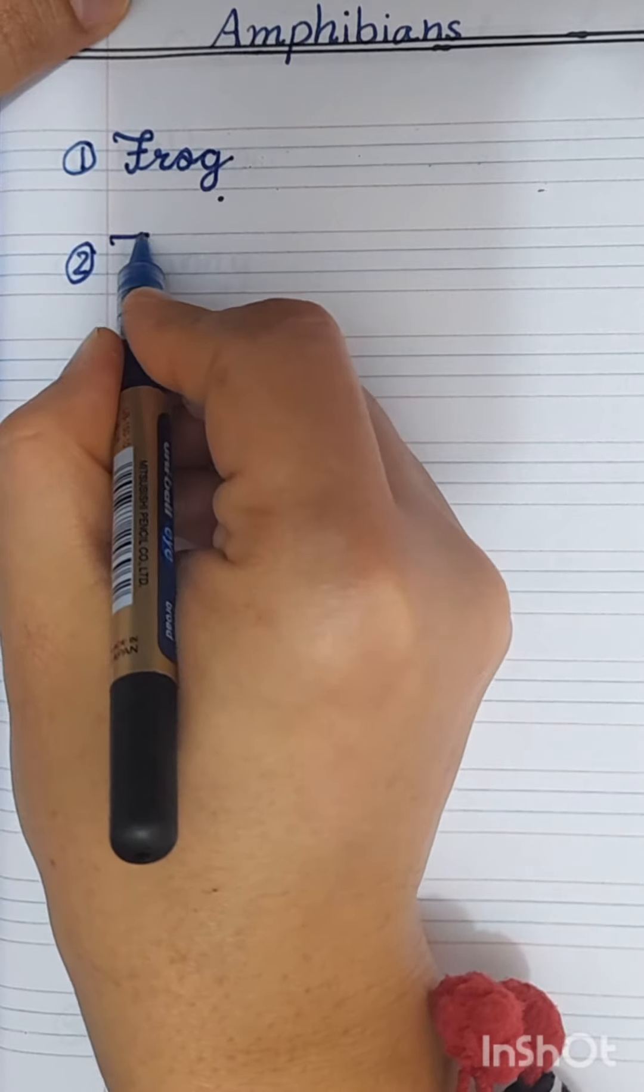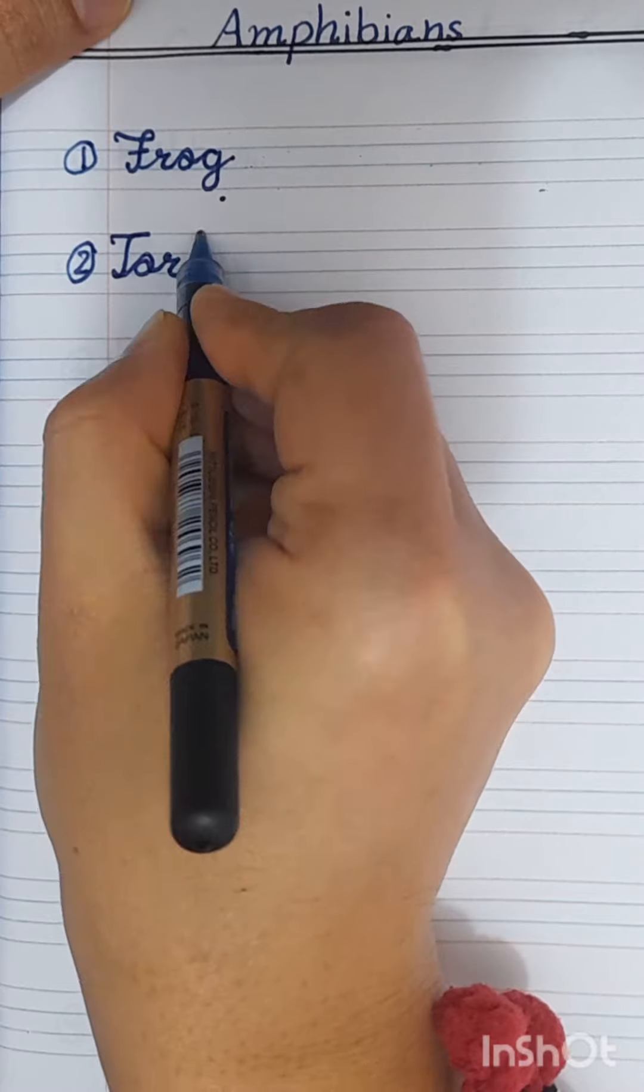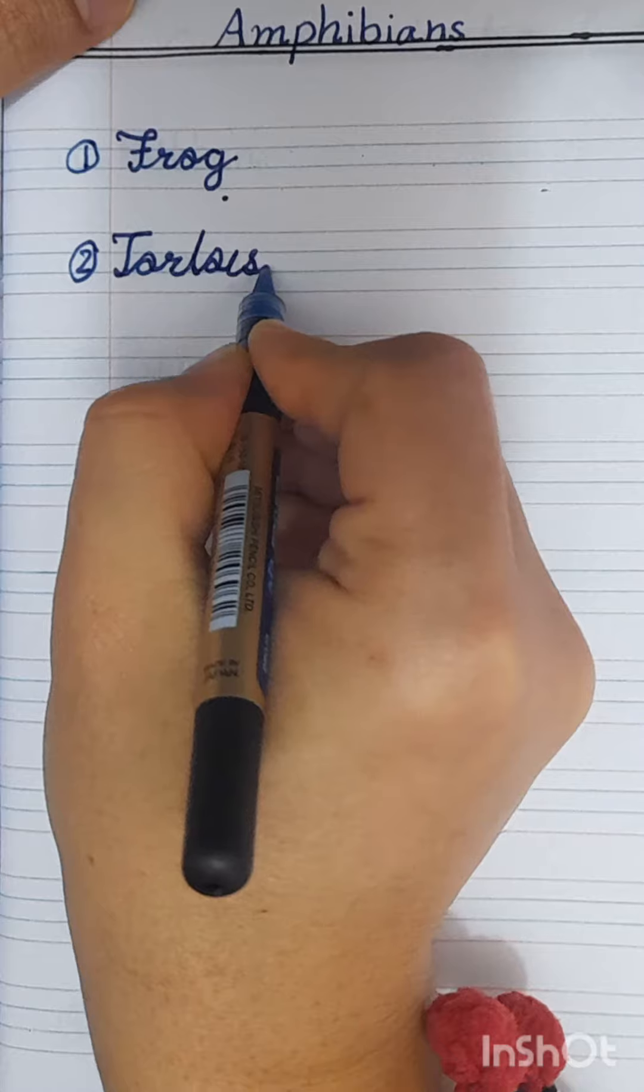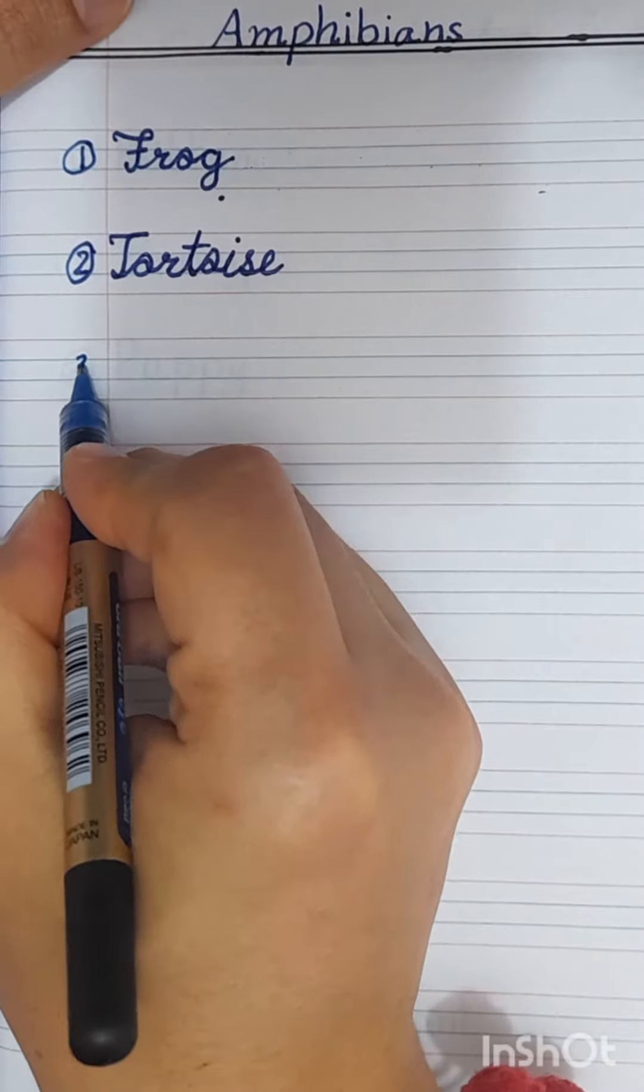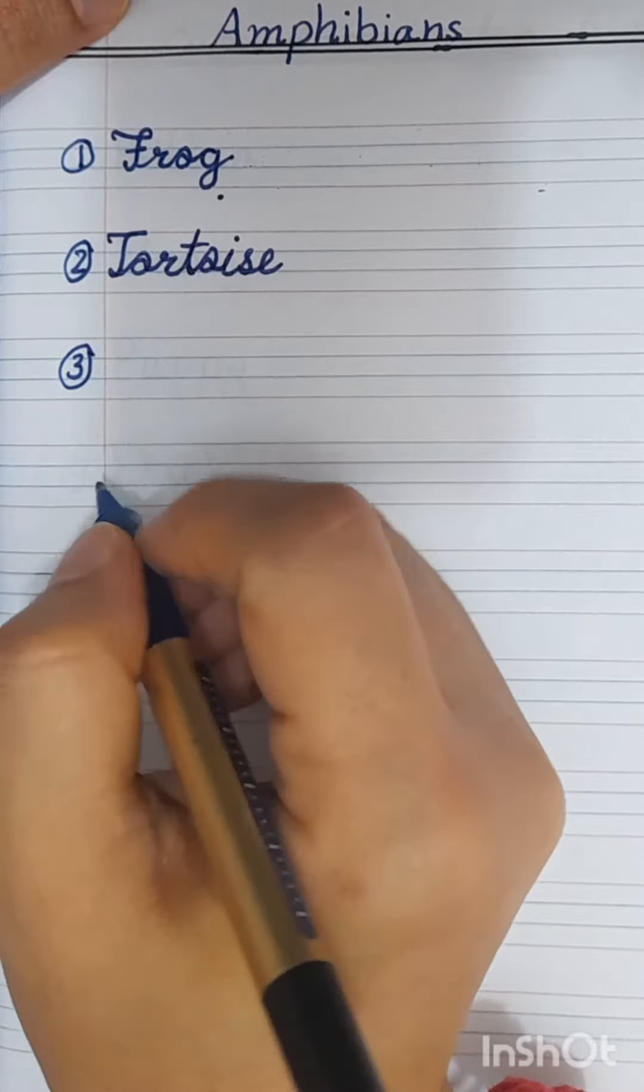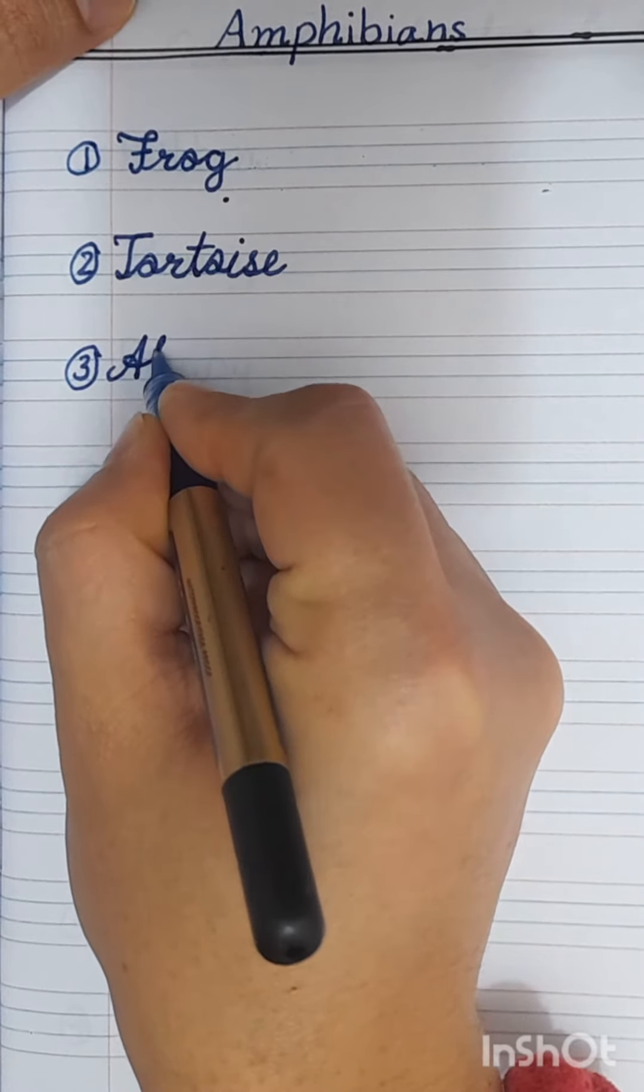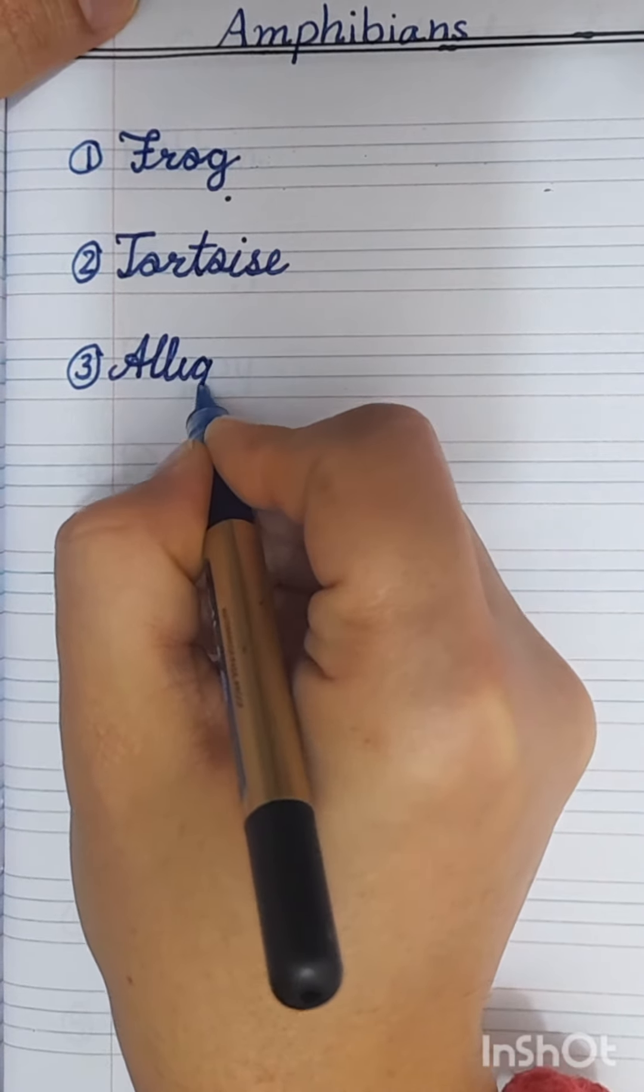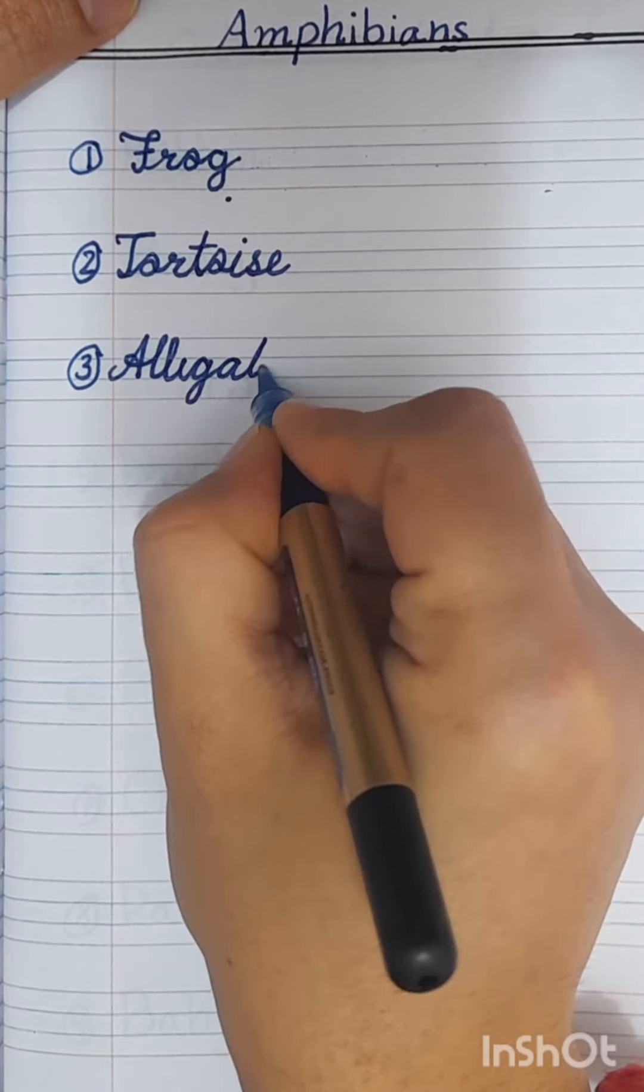T-O-R-T-O-I-S-E, tortoise. Number three: alligator, A-L-L-I-G-A-T-O.